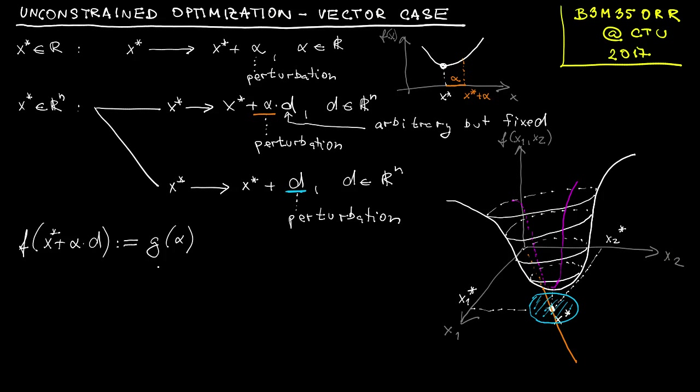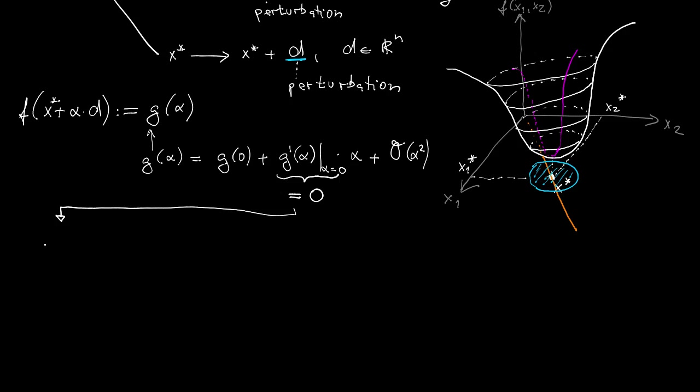We will relabel the function f as g because then it's just alpha that is a free parameter, x star and d are fixed. And we analyze how it changes around 0. Obviously, the necessary condition of minimality of g at 0 is that the first derivative must vanish there. If we now translate it back to what this means for the f function, note that we need to invoke the rule for total derivatives or simply chain rule.